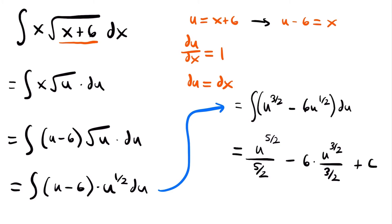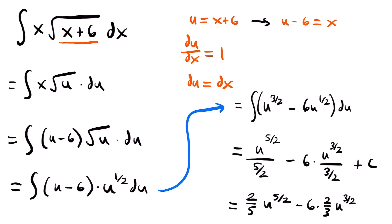To simplify, dividing by a fraction like five-halves or three-halves is the same as multiplying by the reciprocal of those fractions. So u to the five-halves power divided by five-halves is the same as two-fifths times u to the five-halves power. For the other term, we have minus 6 times two-thirds — the reciprocal of three-halves — multiplied by u to the three-halves power, plus C.